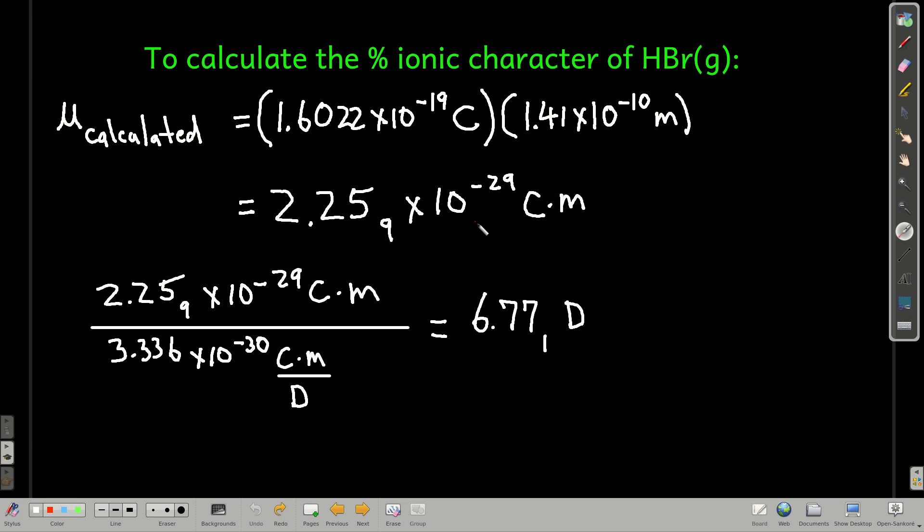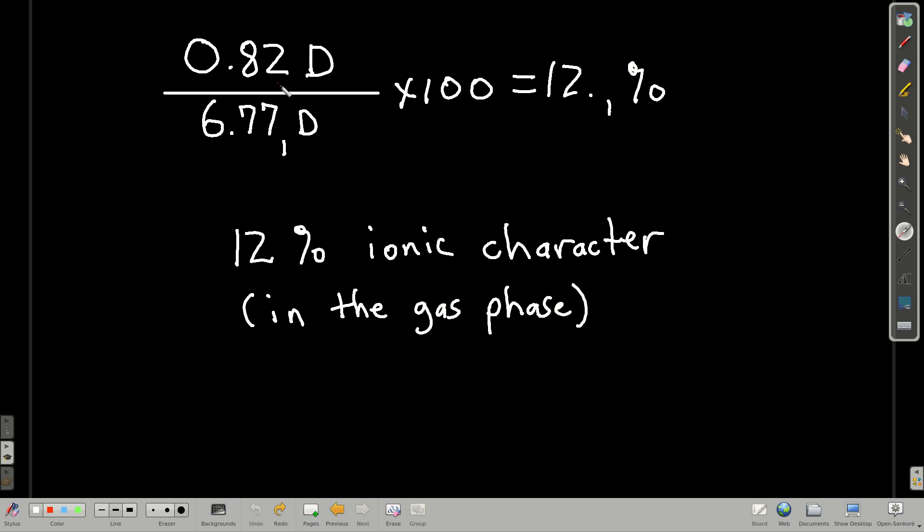And now we're going to convert that back to Debye's because, remember, we're going to take the measure dipole moment, which is in Debye's, and divide it by this guy. Anyway, so all we do is use that conversion factor that I showed you and asked you to memorize. And we get 6.77 Debye's calculated. In other words, this is what the dipole moment in hydrogen bromide would be if that electron were entirely removed from the hydrogen atom and sitting over there by itself on the bromine atom. Now, the real dipole moment is much less. It's 0.82 Debye's. So we divide these, multiply by 100, and we see that the ionic character is only 12% in gaseous hydrogen bromide.